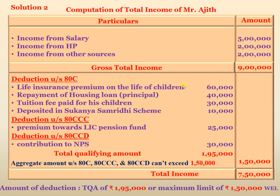Total income is the aggregate of all heads of income after making deductions under Section 80C to 80U. It is the total taxable income computed under various heads of income after providing deductions under Section 80C to 80U. With this problem on 80C, 80CCC, and 80CCD worked out, I conclude today's session. Thank you.